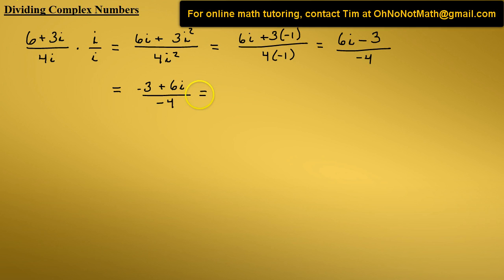Which equals negative 3 divided by negative 4 is 3 fourths. 6 divided by negative 4 is negative 6 fourths i. The 6 fourths can be reduced: 2 goes into 6 three times, 2 goes into 4 twice.